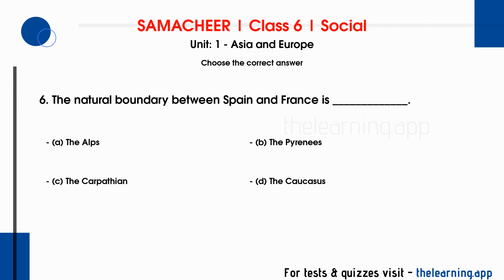Question 6: The natural boundary between Spain and France is dash. Options are: A. the Alps, B. the Pyrenees, C. the Carpathian, D. the Caucasus. Correct answer is B, the Pyrenees.